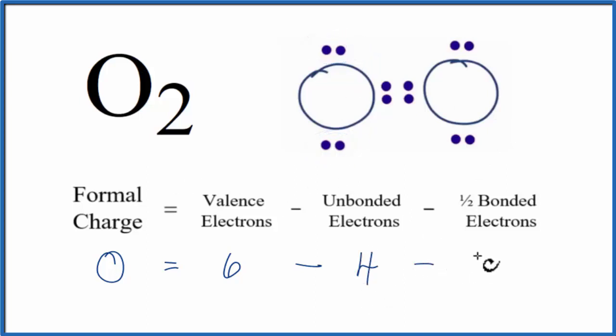Next, we'll subtract one half of the bonded valence electrons. These electrons here between atoms are involved in a chemical bond. It's a double bond. We have two, four of those.